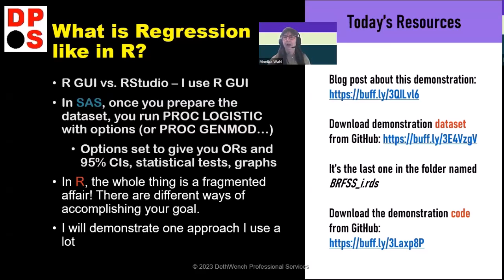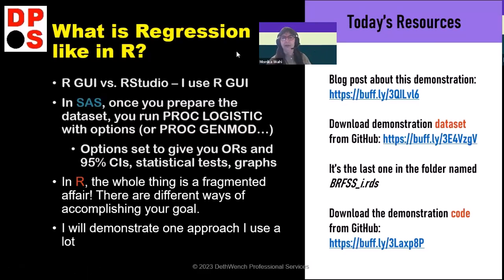Today's resources — on the right side of the slide — you can see there's a blog post we'll go to later. You can download these slides and the demonstration dataset I'm using. It's just a little piece of BRFSS data so I can demonstrate something with thousands of rows. BRFSS is huge — it's got a lot of columns and rows — so I made it a smaller dataset, but it works well for pretending it's big data for a demonstration.